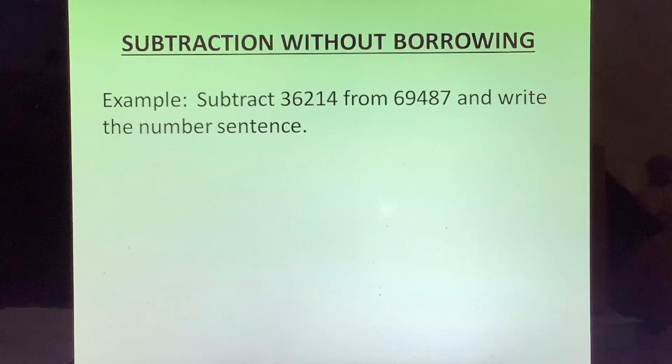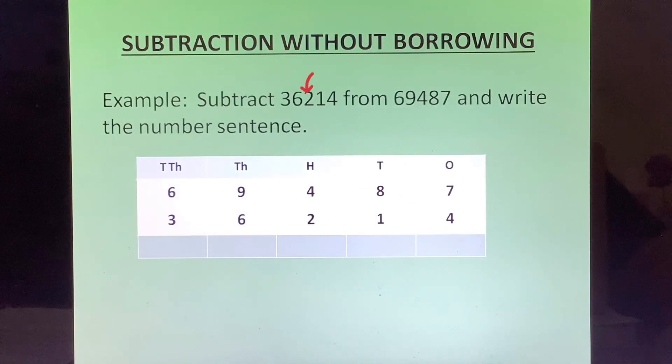Example: subtract 36214 from 69487 and write the number sentence. Now here the first number in the question is 36214, but when we write one below the other we have to write the second number first.